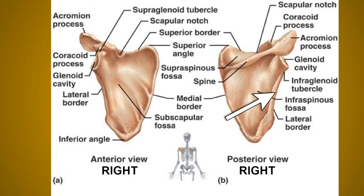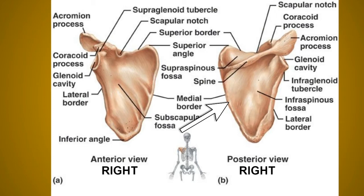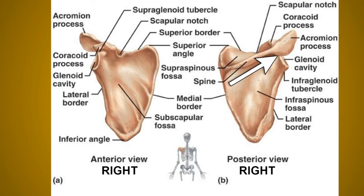The lateral border is thick and at the upper end it presents the infraglenoid tubercle. The medial border is comparatively thinner and extends from the superior angle to the inferior angle. The superior angle is present towards the medial side, while the glenoid angle is present towards the lateral side.